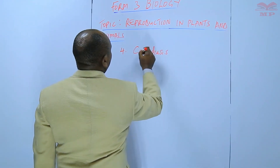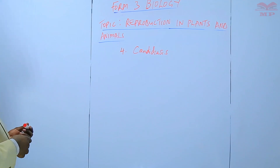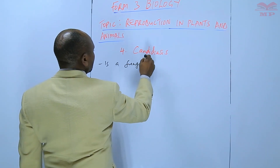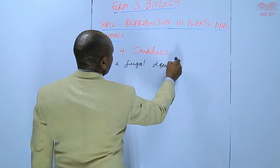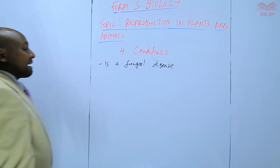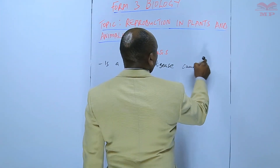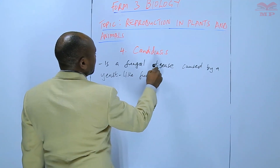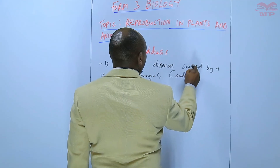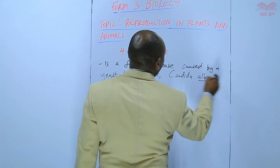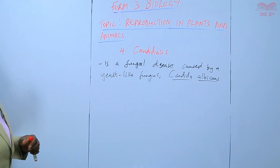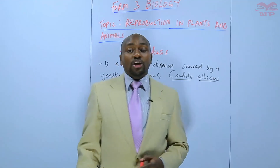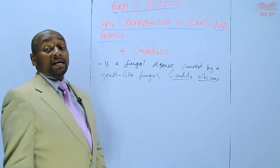The fourth STI is candidiasis. Candidiasis is a fungal disease — it is caused by a yeast-like fungus. We have a fungus called Candida albicans which looks like yeast, and this yeast-like fungus grows mainly on the genitalia of both sexes.